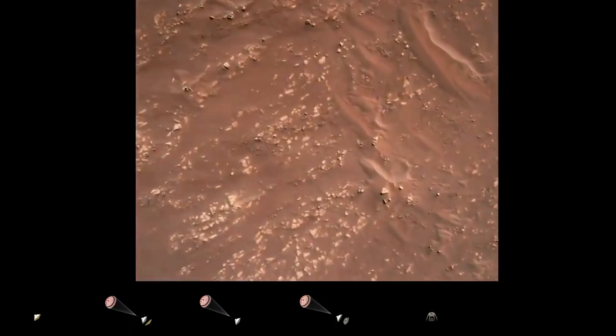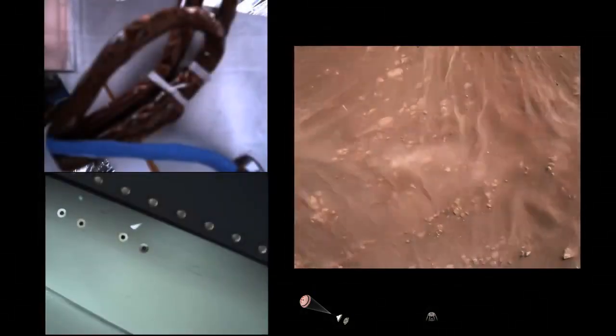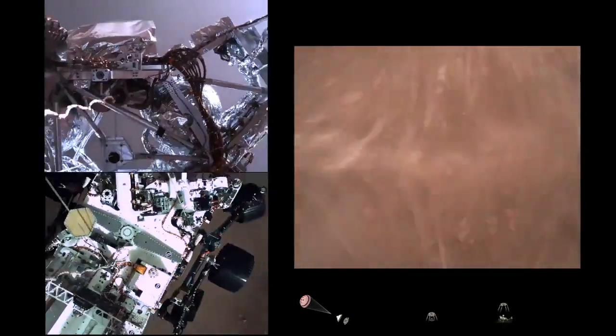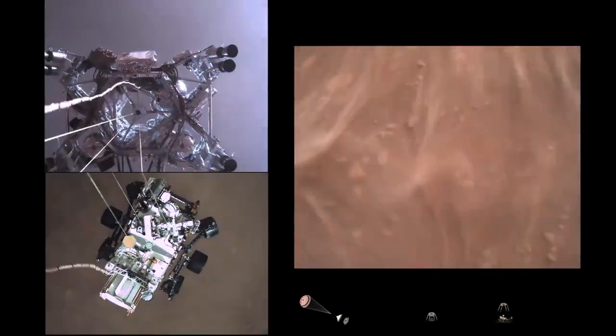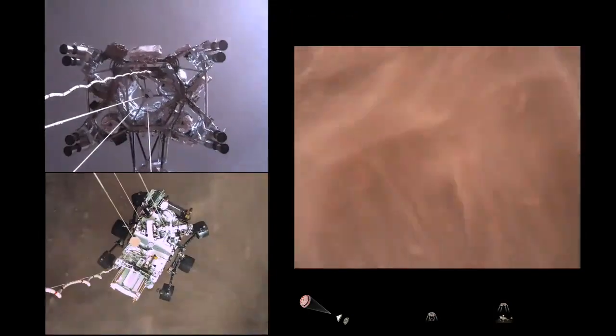We have started our constant velocity accordion, which means we are conducting the sky crane, about to conduct the sky crane maneuver. Sky crane maneuver has started. About 20 meters off the surface.